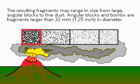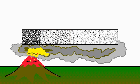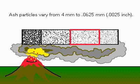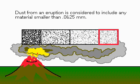The resulting fragments from this gaseous eruption may range in size from large, angular blocks to fine dust. Angular blocks are fragments larger than 32 millimeters in diameter. Lapilli vary from 32 millimeters to 4 millimeters. Ash particles vary from 4 millimeters to 6 hundredths of a millimeter. Dust from an eruption is considered to include any material smaller than 6 hundredths of a millimeter.